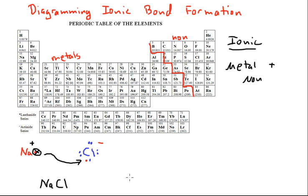Let's look at one more example. For this one, I've selected the example of aluminum sulfide. Aluminum is an element that has three valence electrons — we can see it's located right here on the periodic table — so I'll draw those in here, here, and here.